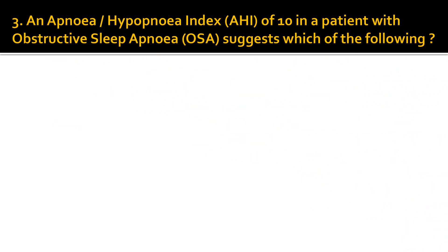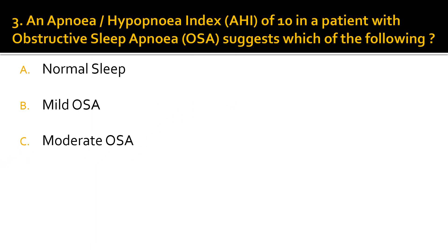Question 3. An Apnea Hypopnea Index, or AHI, of 10 in a patient with obstructive sleep apnea suggests which of the following? Is it normal sleep, mild OSA, moderate OSA, or severe OSA? The correct answer is mild obstructive sleep apnea.